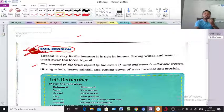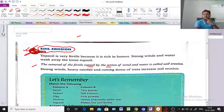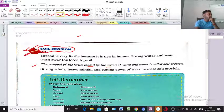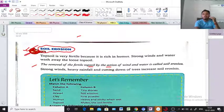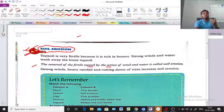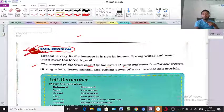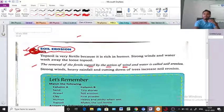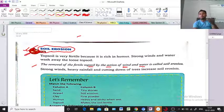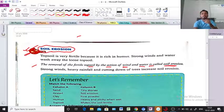The removal of the fertile topsoil by the action of wind and water is called soil erosion. What is soil erosion? The removal of fertile topsoil by the action of wind and water is called soil erosion.